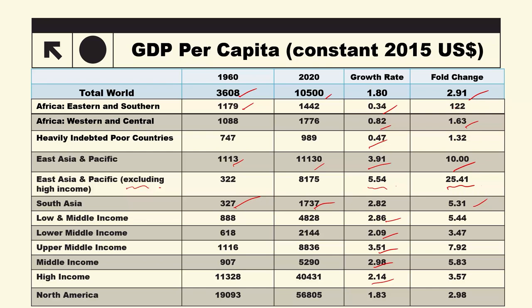North America's growth rate is 1.83%. High income countries tend to show a lower percentage growth rate because they already had quite high living standards. If income is 100 per day versus 10,000,000 per day, then the same absolute improvement looks like a very small percentage.